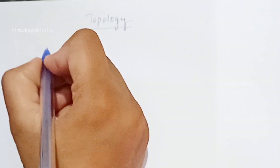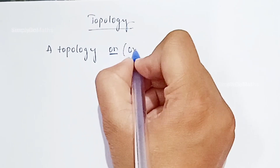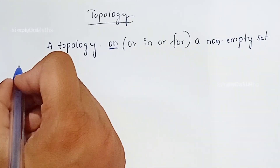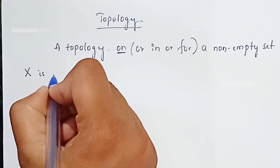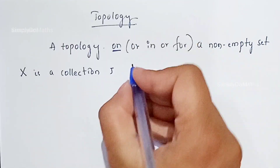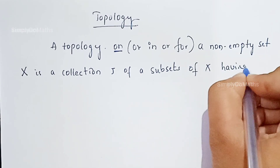Hello everyone. Topology is a very important topic which we have studied or will be studying in our mathematics. Let us define the term topology. A topology — we use the word 'on,' sometimes 'in' or 'for' — on a non-empty set capital X is a collection tau (the symbol tau) of subsets of capital X having the following properties.